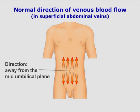In normal circulation, the flow is away from the midline, drawn horizontally over the umbilicus.